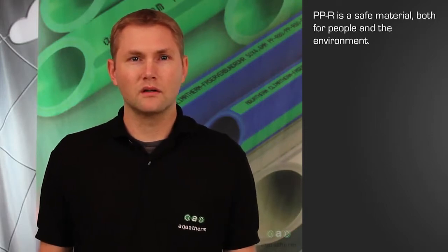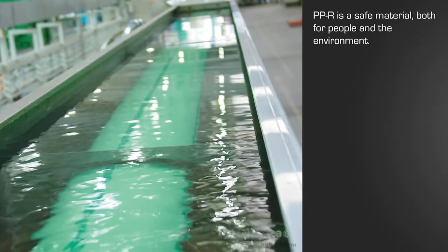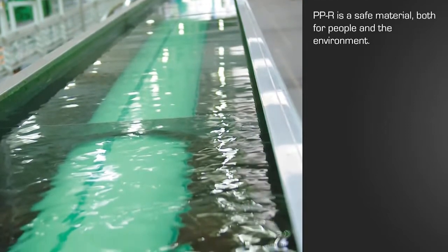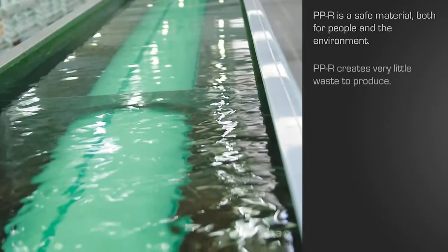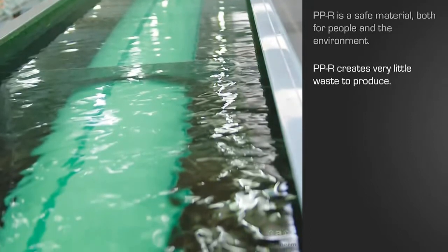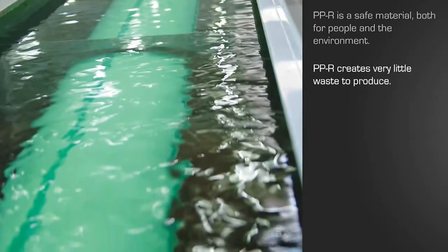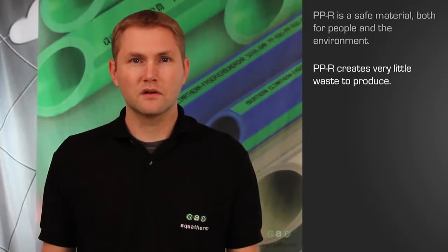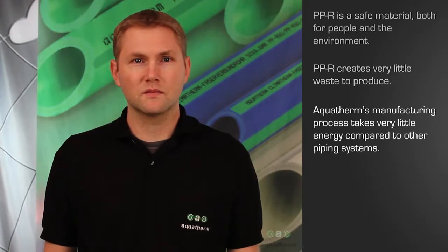Another advantage of polypropylene over other materials is that it is very safe for both people and the environment without sacrificing quality. Polypropylene does not require mining or smelting to produce. It does not use hazardous or toxic chemicals in its production, nor does it contain any harmful chemicals. Even the amount of electricity required to produce it is lower than other systems.